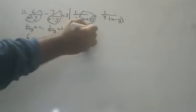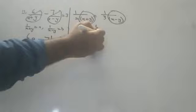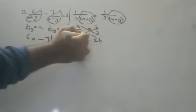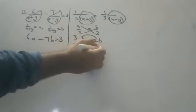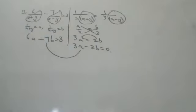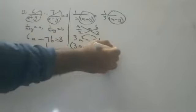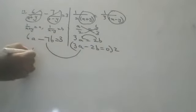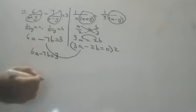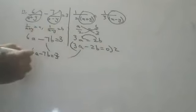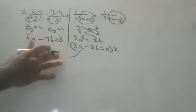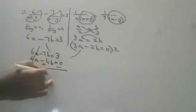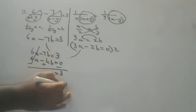For the second equation, after cross multiplication we get 3a = 2b, which gives 3a minus 2b = 0. To solve both equations by elimination, multiply the second equation by 2 to get 6a minus 4b = 0. Subtracting from the first equation: 6a minus 7b = 3 and 6a minus 4b = 0 — the 6a terms cancel, leaving minus 3b = 3.